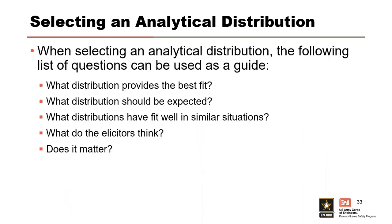So how do we choose a distribution? Five questions can serve as a guide: What distribution provides the best fit? What distribution should be expected? What distributions have fit well in similar situations? What do the elicitors think? And does it even matter? Let's expand on what elicitors think and talk briefly about subjective probability estimates.